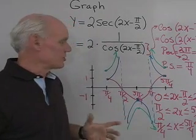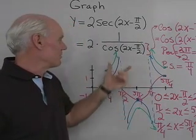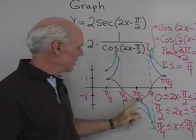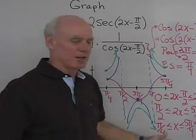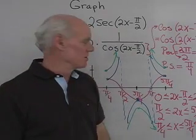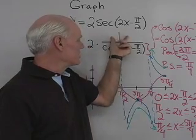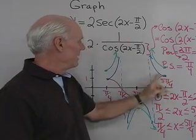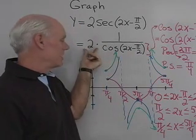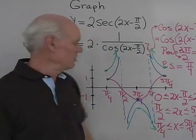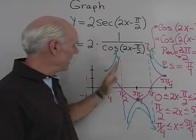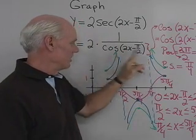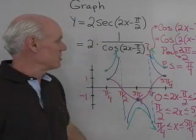So I break it down into smaller steps. First, graph y = cos(2x − π/2) — that's the red graph — using the same method as always. Then take its reciprocal to get the blue graph. Finally, multiply that reciprocal by 2 to get the green graph, which multiplies every y-value on the blue graph by 2. That's a look at graphing some trig functions.